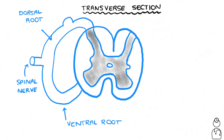Just to clarify, the spinal nerve, dorsal root, and ventral root are also found on the opposite side of the cord, but for simplicity we'll focus on one side throughout the video. The same goes for the white matter tracts when we get to them — don't forget that everything is mirrored on the other side as well.